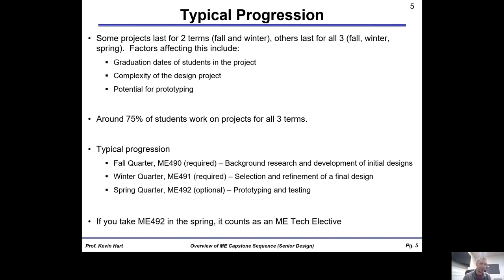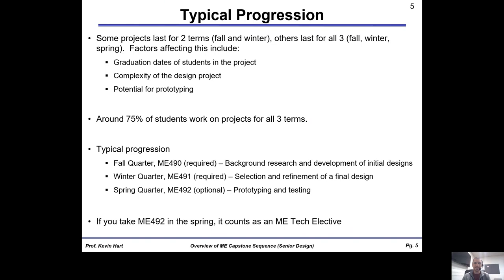Typical progression: in fall quarter you do background research and develop initial designs. In winter you hone in on a particular design by refining it. If you continue to the third term, you'll do prototyping, further design refinement, and possibly testing of that prototype. There's variability depending on the project. Also note that if you take ME 492 — the spring quarter capstone course — that counts as an ME technical elective toward your graduation.